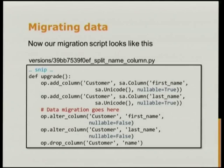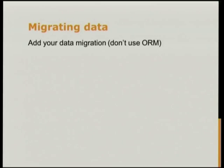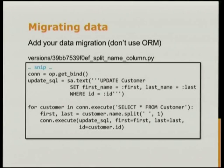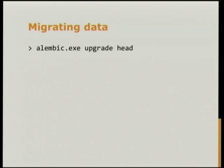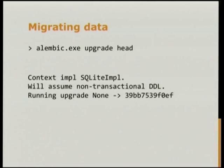Now our migration script looks like this: we have our add columns as nullable, followed by our alter columns. All we need to do is add our data migration. To do that, we write some normal code. The first thing you need is a connection to your database — the op object has a get_bind, which gets you the SQLAlchemy connection. Then you can use the execute method to do whatever you like. We iterate over all the customers, split the name, and update the rows.